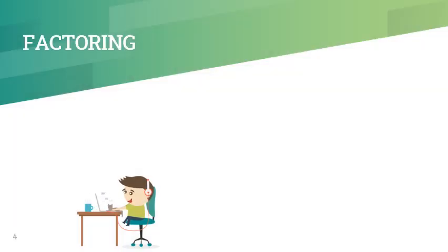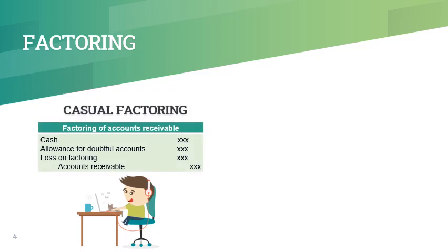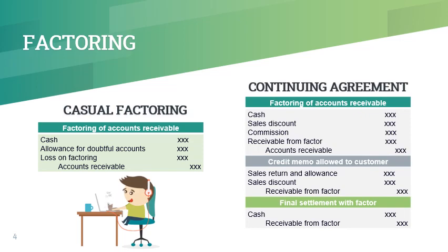The two forms of factoring are cash flow factoring and factoring as continuing agreement. Cash flow factoring is just like an ordinary sale of an asset where a loss is recognized on the difference between the proceeds received and the carrying amount. In continuing agreement, the factor typically charges commission for assuming the credit and collection function of the entity. Moreover, the factor usually withholds a certain amount called the factor's holdback as protection against customer returns, allowances, and other special adjustments. The net proceeds from factoring is the remaining balance after deducting allowance for sales discount, commission, and factor's holdback.